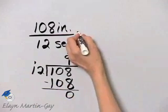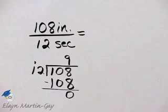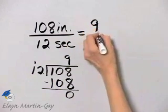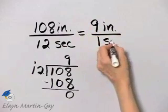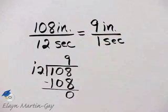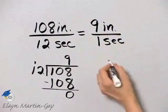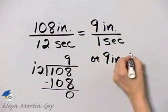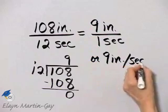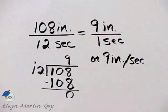What does that mean? That means that this rate is equal to 9 inches every 1 second. We can actually write this as 9 inches per second, and we have written the rate as a unit rate.